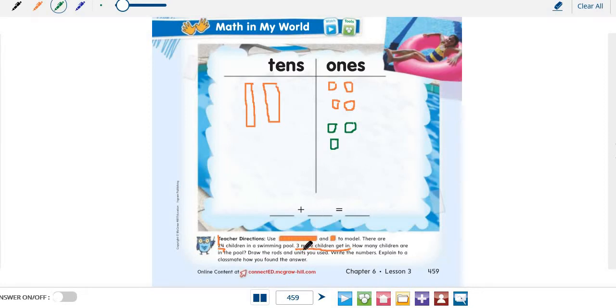These are 3 unit cubes for the 3 more children that get in. So now, how many tens do we have, grade one? Here we have 2 tens. And how many ones in all? 4 plus 3 equals 7. So we have 7 ones in all. So 24 plus 3 equals 27.